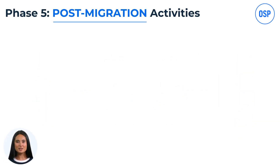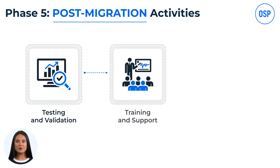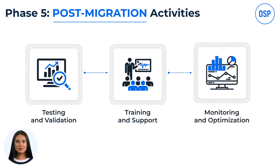Phase 5 covers Post-Migration Activities. Thorough testing and validation are crucial — conduct unit tests, integration tests, and user acceptance tests to verify data accuracy and proper system functioning, helping catch issues before full deployment. Train your staff on the new Epic EHR system with comprehensive training sessions and resources, and offer ongoing support for any questions. Continuous monitoring and optimization are also necessary — regularly check for performance issues or errors and optimize the system as needed to maintain efficiency over time.